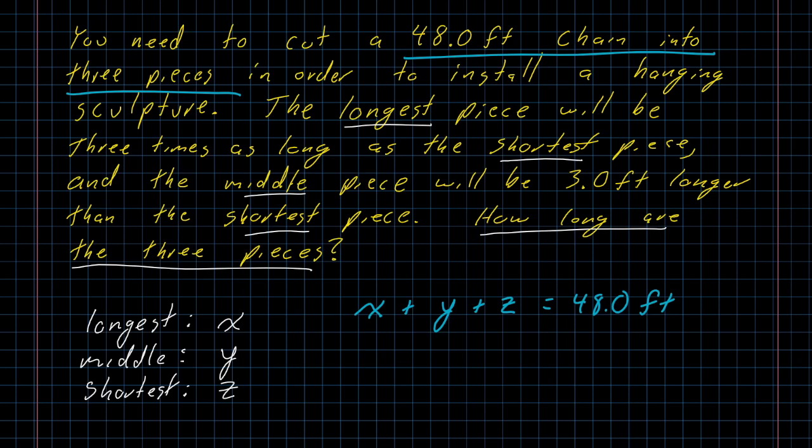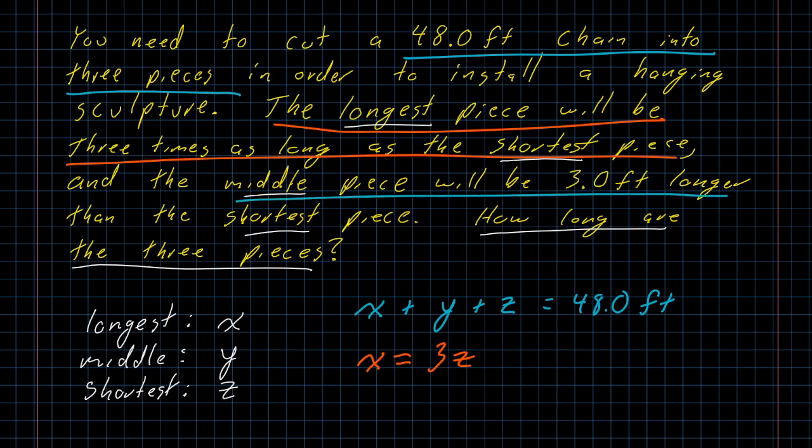Then I've got a couple of pieces of information about the cuts. The longest piece will be three times as long as the shortest piece. The longest piece, we've already decided, is labeled as x. My verb here is 'will be' instead of 'is', but that's still an equal sign. Three times as long as the shortest piece. The shortest piece I called z, so I'm going to get that x is three times z. Likewise, the middle piece will be three feet longer than the shortest piece. All right, the middle piece we called y, again, 'will be' verb equal sign. Three feet longer means add on an extra three feet, so it'll be z plus 3.0 feet.